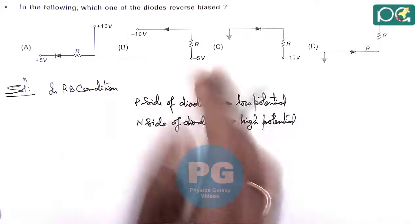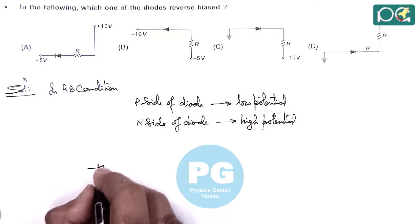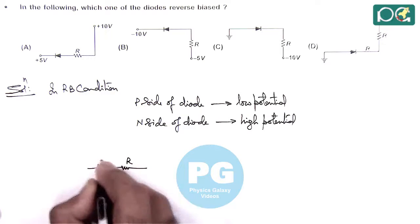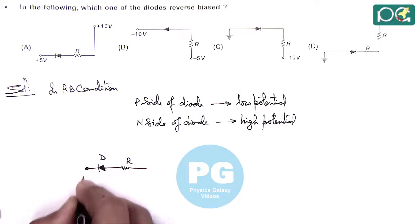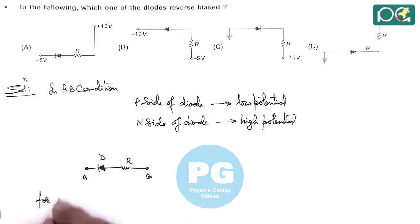So we need to check which of the following options. We are given a diode with a protective resistance R. We consider terminals A and B. For reverse bias, V_A should be greater than V_B. The N side of the diode should be at higher potential.